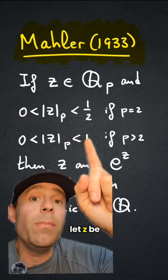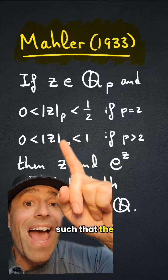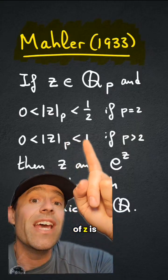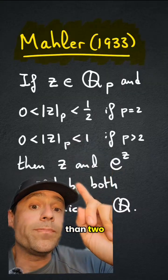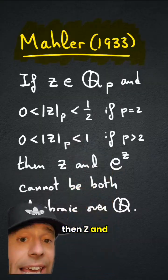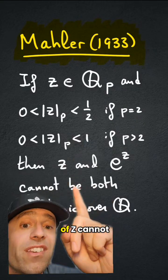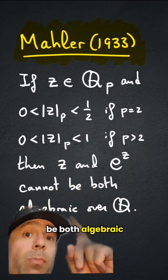Here's the theorem. Let p be a prime, and let z be a p-adic number, such that the p-adic absolute value of z is less than a half if p is 2, or less than 1 if p is bigger than 2. Then z and e to the z, the exponential of z, cannot be both algebraic over Q.